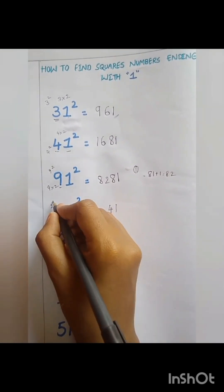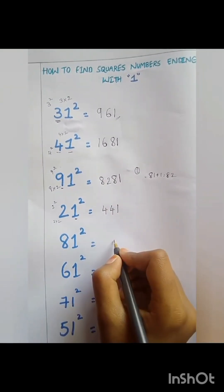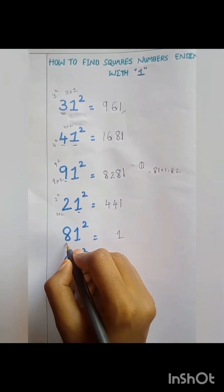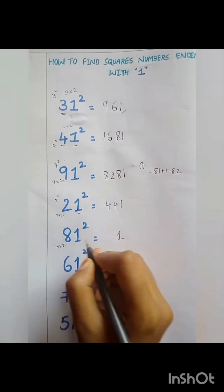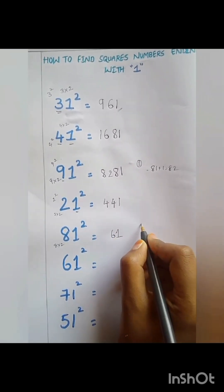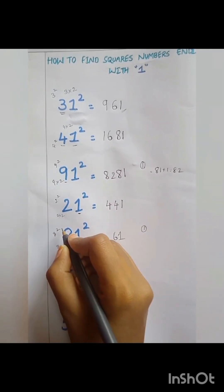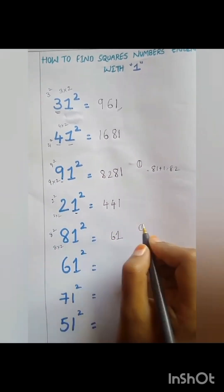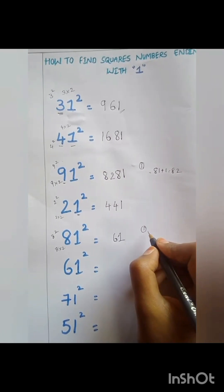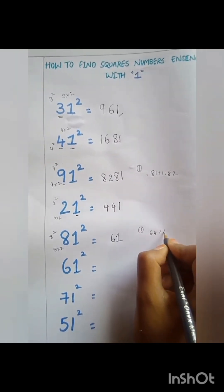Again, 81 squared. Unit digit is 1. 8 into 2 is equal to 16 — 1 shall be carried. Again, 8 squared is equal to 64. 64 plus the carried number is equal to 65. Therefore 81 squared is equal to 6561.